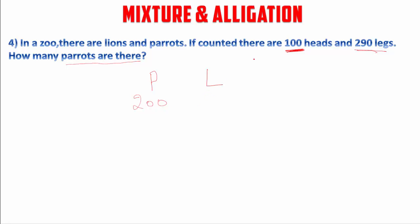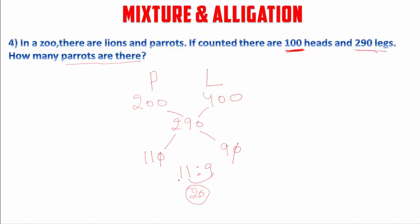If all animals are lions then we get 400 legs, but the given number is 290 legs. So we subtract: 400 minus 290 is 110, and 290 minus 200 is 90. So the ratio is 110 to 90, which simplifies to 11:9. 11 plus 9 is 20, meaning in 20 animals, 11 are parrots and 9 are lions. For 100 animals, parrots equal 11 by 20 times 100, which gives us 55 parrots.